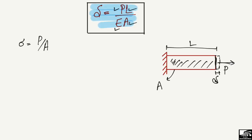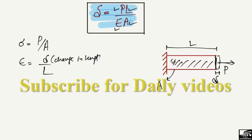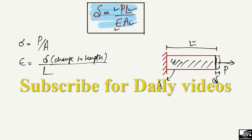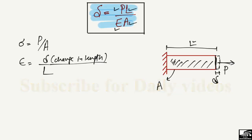The strain created due to this load will be equal to the change in length divided by the original length, where small sigma is the change in length — that is, the deformation — while L is the original length of the member.